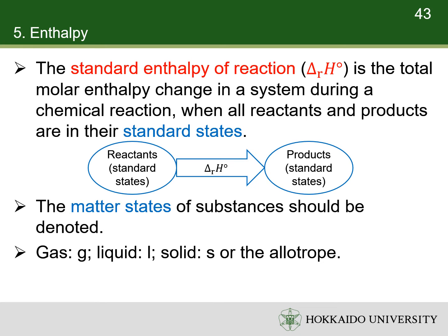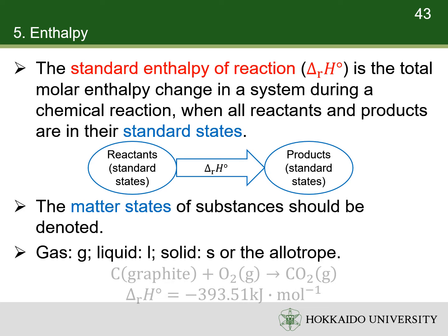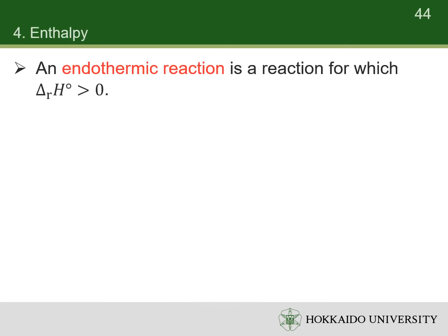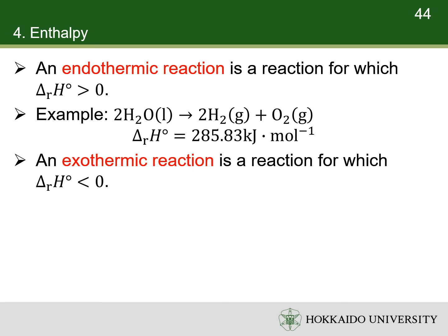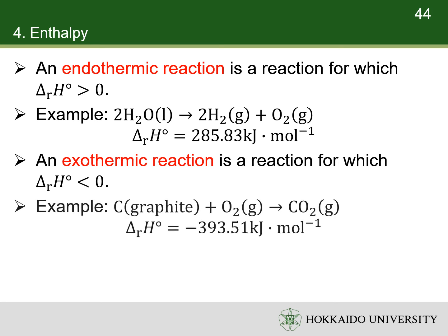If an element has multiple allotropes, the type of allotrope should be denoted instead of the state. For example, the reaction between carbon as graphite and oxygen in gas state to form carbon dioxide in gas state. The standard enthalpy of this reaction is the enthalpy change during the reaction if they are all in their standard states. An endothermic reaction is a reaction whose standard enthalpy of reaction is positive — for example, the decomposition of water. An exothermic reaction is a reaction whose standard enthalpy of reaction is negative — for example, the combustion of graphite.